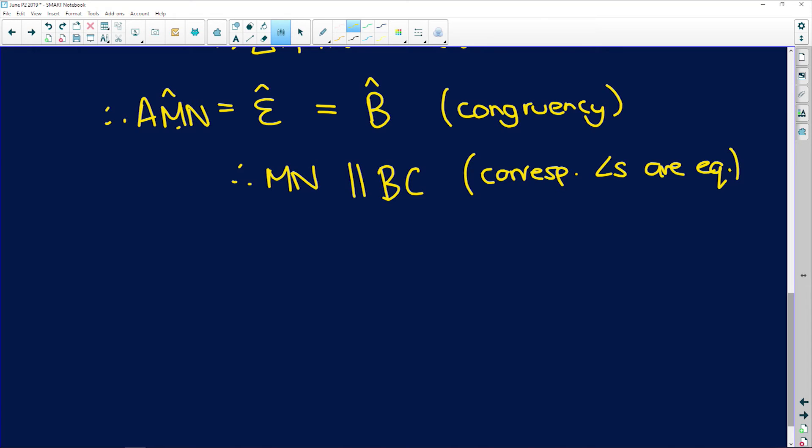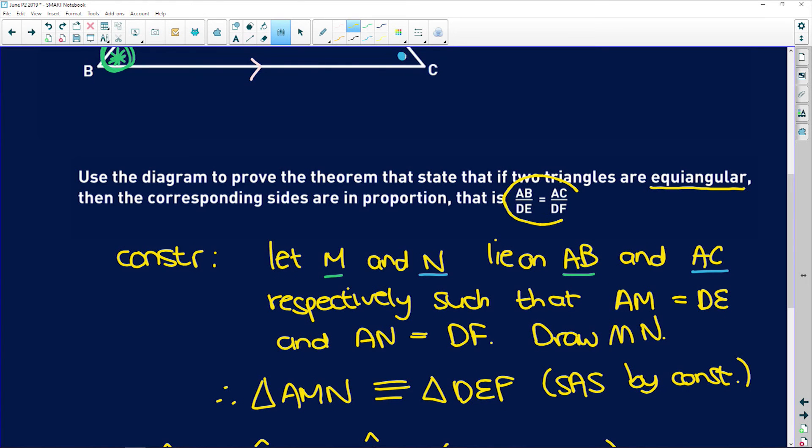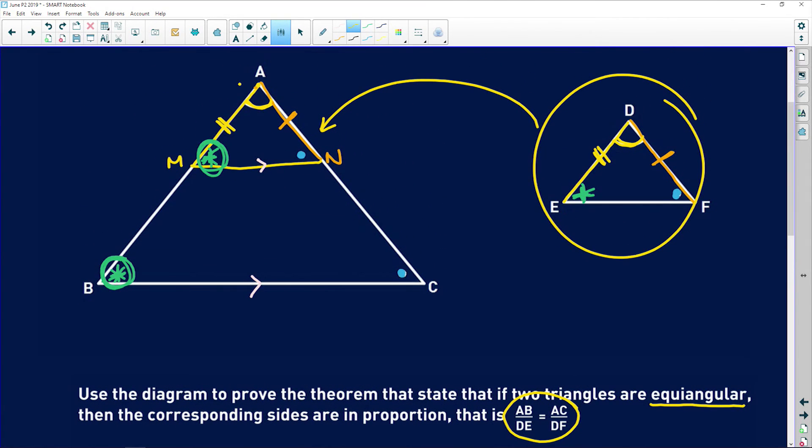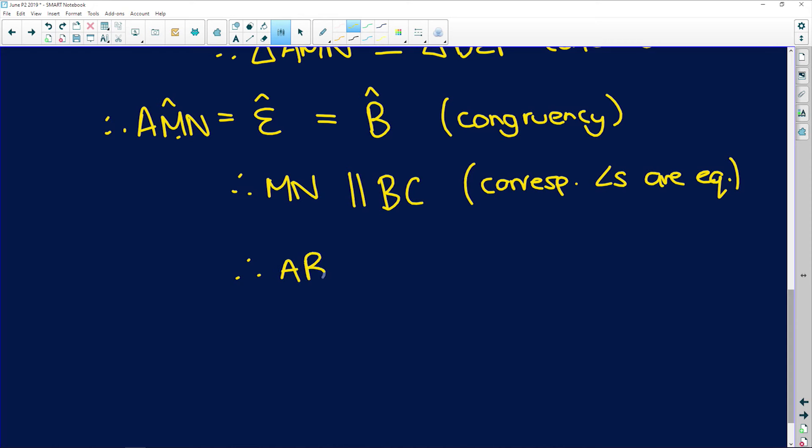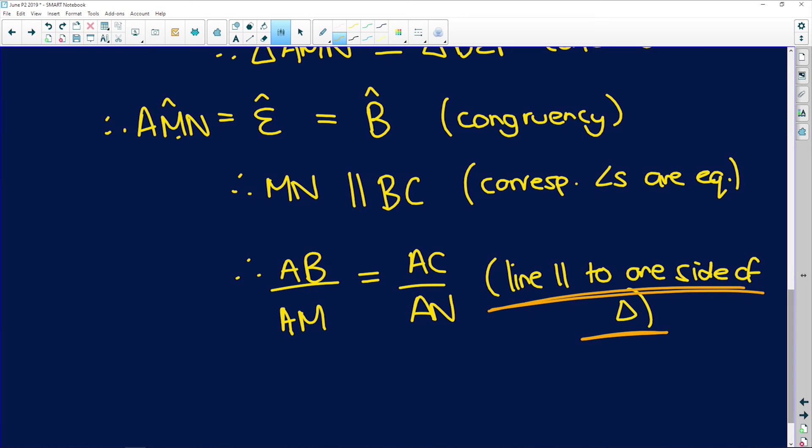And now here's where the similarity comes in. We are trying to prove that AB over DE is equal to AC over DF. So AB here, in these similar triangles, we can say that AB over AM is equal to AC over AN, because AB over AM is equal to AC over AN, because line parallel to one side of the triangle. And that's the theorem that you can already use. We've already established the parallel line relationship.